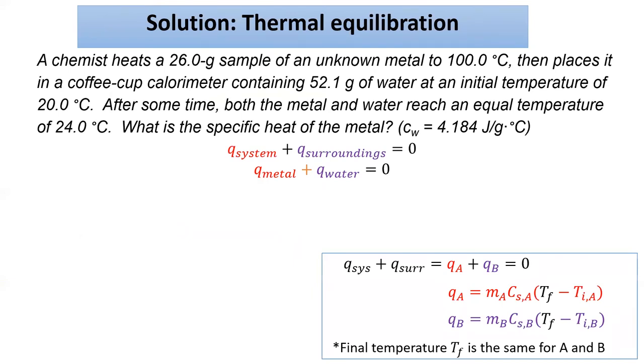We'll start with the first law of thermodynamics. Q system plus Q surroundings equals zero. In this problem, I consider the system to be the hot piece of metal and the surroundings are the room temperature water. I'll need to set up equations for both Q metal and Q water. The heat change in the metal is equal to MCAT for the metal, which is the mass of the metal, times the specific heat of the metal, which is unknown, times the change in temperature of the metal. Change in temperature is always calculated as final temperature minus initial temperature. So in this case, 24 degrees minus 100 degrees. If we simplify the math, I get negative 1976 times the specific heat of the metal.